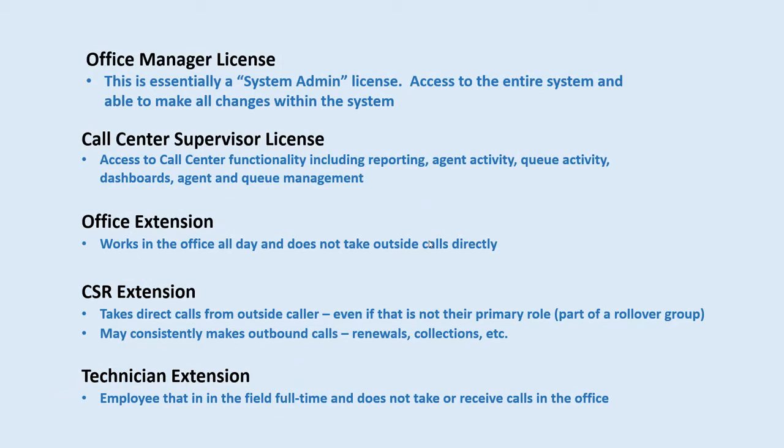We're going to talk about the different licensing structure. You have an Office Manager license — it's essentially a system admin license. It gives you access to the entire system. You're able to make changes within the system; it gives you the access to do whatever you need to do.